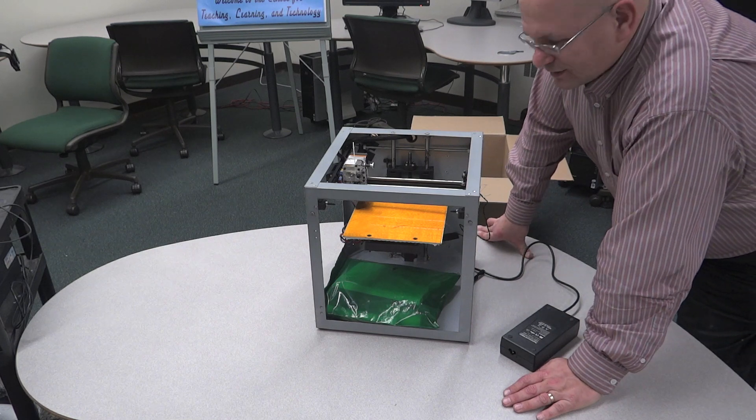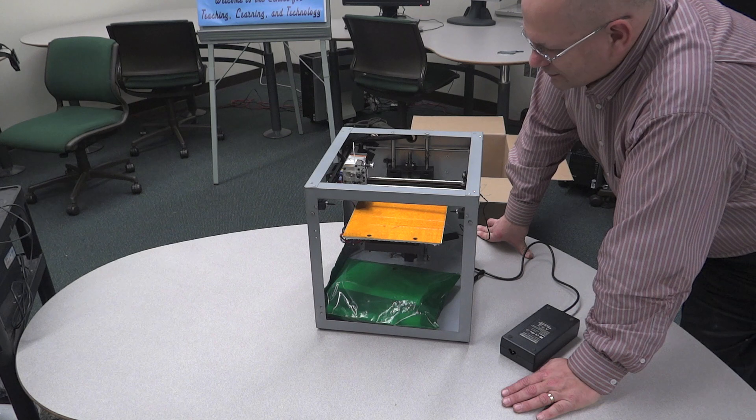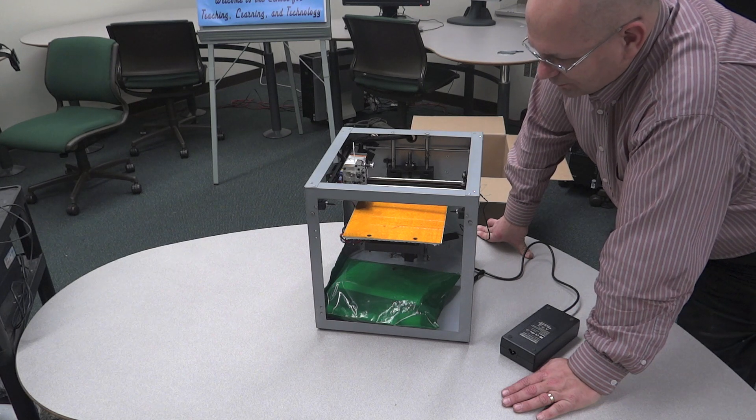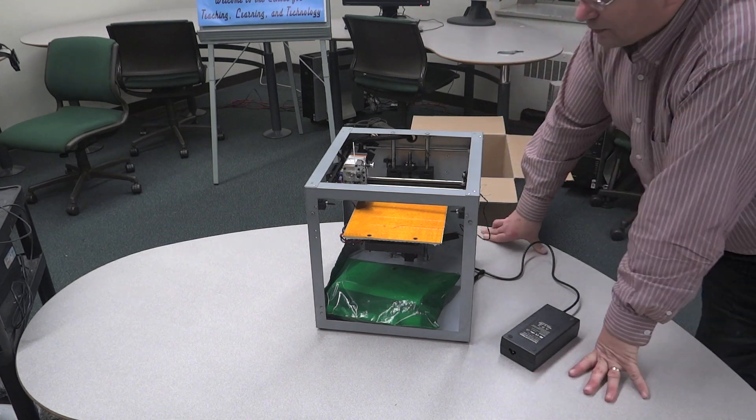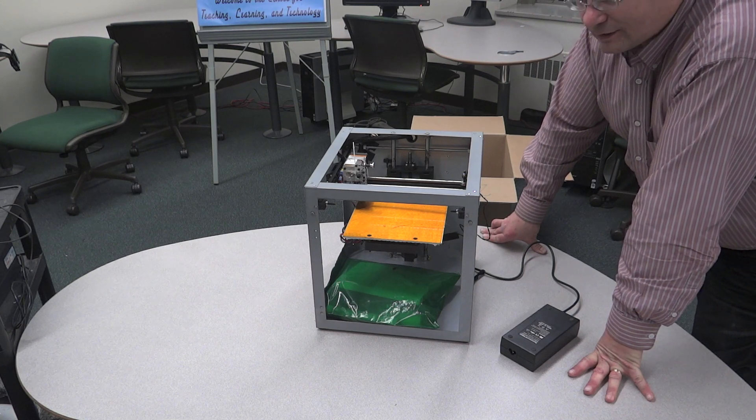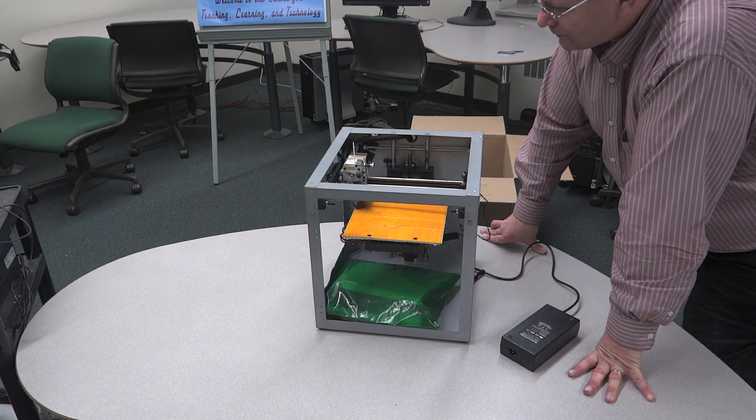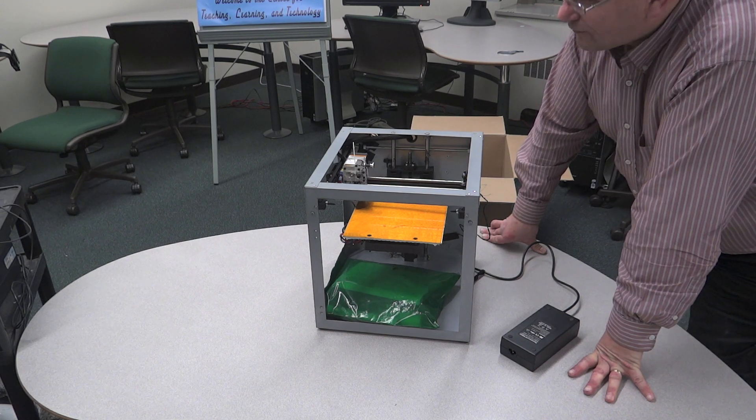Now, it's a significant stage, and that's one of the interesting things is the SolidDoodle 3 is sold to print with a volume of 8 inches by 8 inches by 8 inches, or 8 inches cubed. While the second generation did 6 by 6 by 6, so significant increase in build volume.